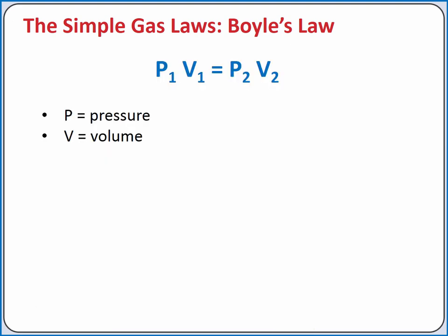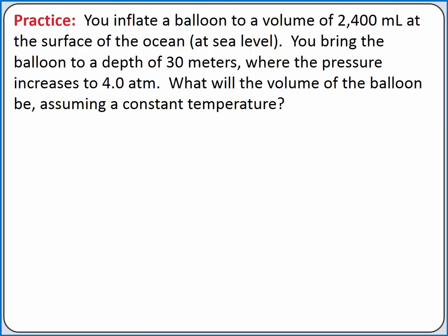We can represent this inverse proportionality mathematically using the equation P1V1 equals P2V2, where P is pressure and V is volume. Let's practice using Boyle's law.